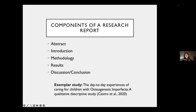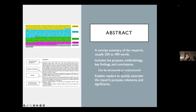I'm structuring this presentation like a bit of a case study. I'm going to use an exemplar study published by one of my research colleagues called 'The Day-to-Day Experiences of Caring for Children with Osteogenesis Imperfecta.' This is a qualitative study. I know a lot of you are probably doing quantitative research, but mostly it's pretty much the same with just some minor methodological differences. So the first part is the abstract — this is usually the first thing you see when you open a research report on Google Scholar. It's a concise summary of your entire research, usually between 250 to 400 words, and it includes the purpose, methods, key findings, and conclusions.